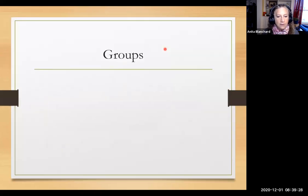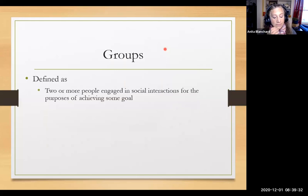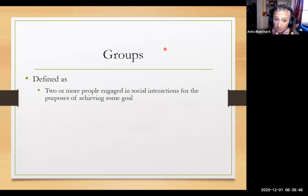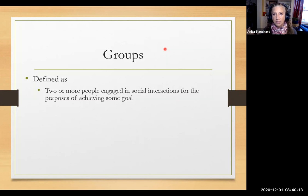Groups. Starting off, just disagreeing with the book a bit. The book defines a group as two or more people engaged in social interactions for some goal. I find my definition is three or more people, because I think a dyad — two people — is different. How two people interact with each other is different than how three or more people interact. It is possible to be a group with two people, like an HR representative interacting with a finance representative. But two people of the same work group are more of a dyad than a larger group. So it's tricky.